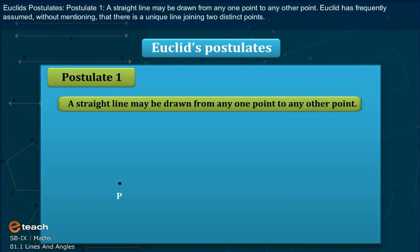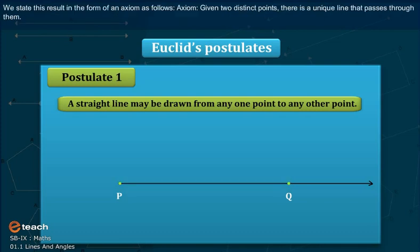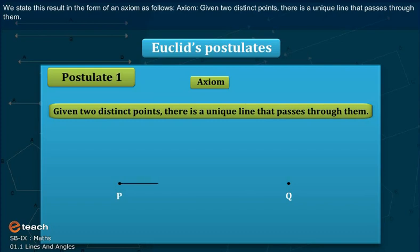Postulate 1: A straight line may be drawn from any one point to any other point. Euclid frequently assumed, without mentioning, that there is a unique line joining two distinct points. We state this result in the form of an axiom: Given two distinct points, there is a unique line that passes through them.